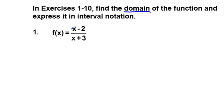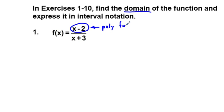If we look at the numerator, we have x minus 2. Now x minus 2 in and of itself is a polynomial function, and a polynomial function has as its domain all real numbers. So if we're looking for exclusions to something in the numerator, we're not going to find it. But in the denominator, we have a different situation.